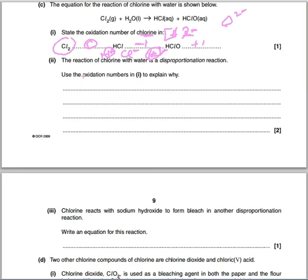Okay, the reaction of chlorine with water is a disproportionation reaction. Use the oxidation numbers in here to explain why. So if we look at chlorine in this, and if we look at the reaction up here, chlorine here has an oxidation number of zero, but it forms, it becomes part of two separate products.